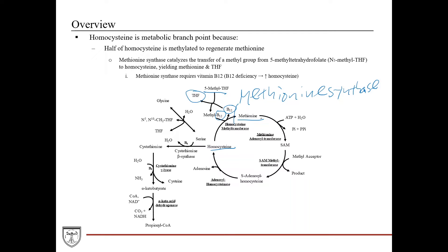That's how methionine is regenerated from homocysteine. Methionine synthase requires vitamin B12, so if you have vitamin B12 deficiency, you can't carry out this reaction and you're going to result in elevated levels of homocysteine.